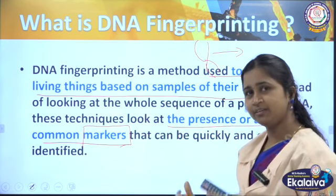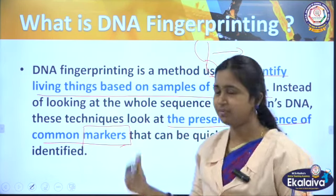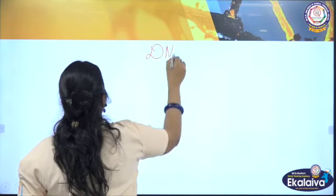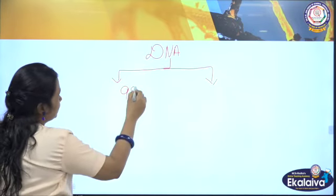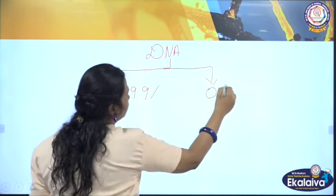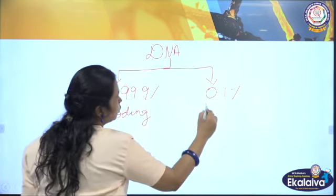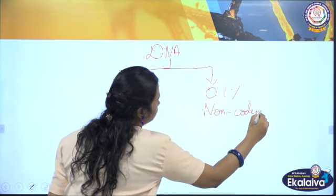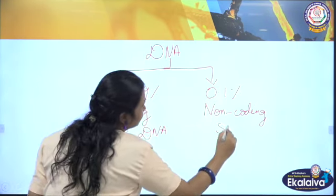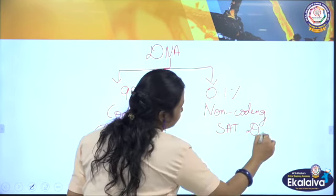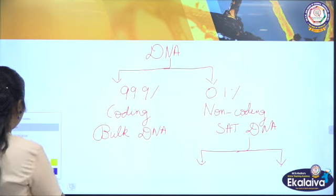Now let's look at our DNA. If you take the DNA, there are two groups. One is the bulk DNA and the other is the satellite DNA. The 99.9% that is similar includes both coding and non-coding regions — we call this bulk DNA. The remaining is satellite DNA, or sat DNA. Sat DNA is again categorized into two types: mini-satellite and micro-satellite.